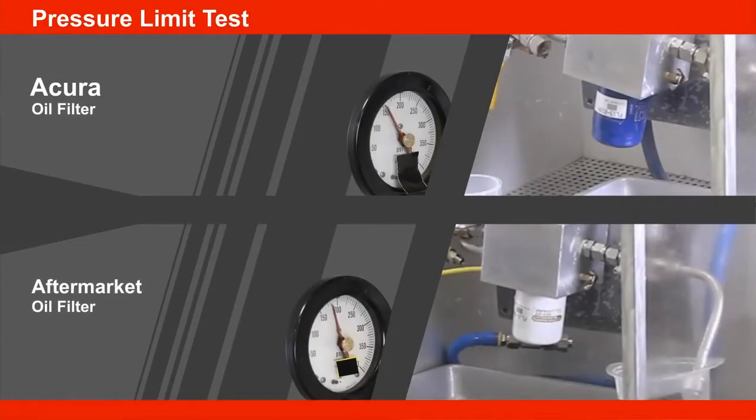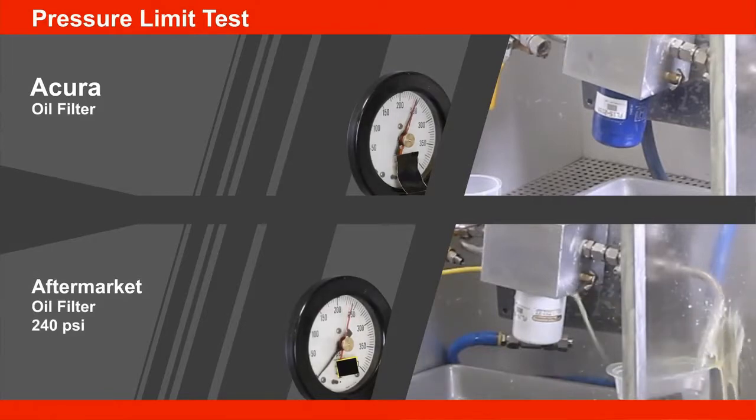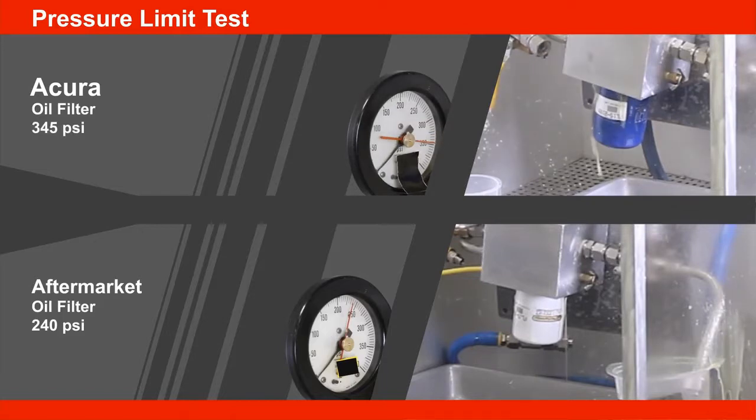The pressure limit is the amount of pressure the oil filter can handle before it begins to leak. The aftermarket oil filters tested ranged from 66 percent to 100 percent of the genuine oil filter pressure limit. None could handle greater pressure than the Acura Genuine Oil Filter.